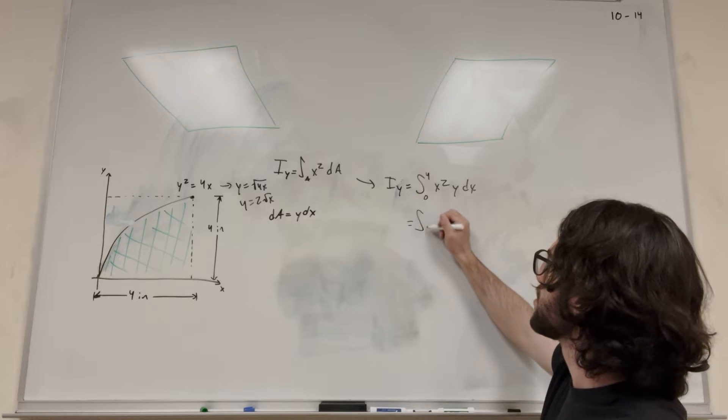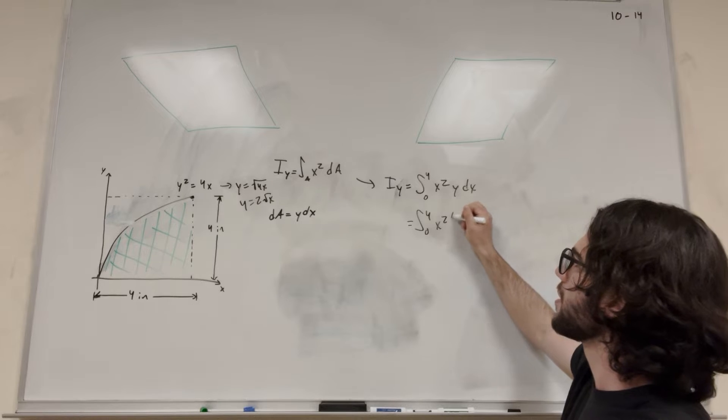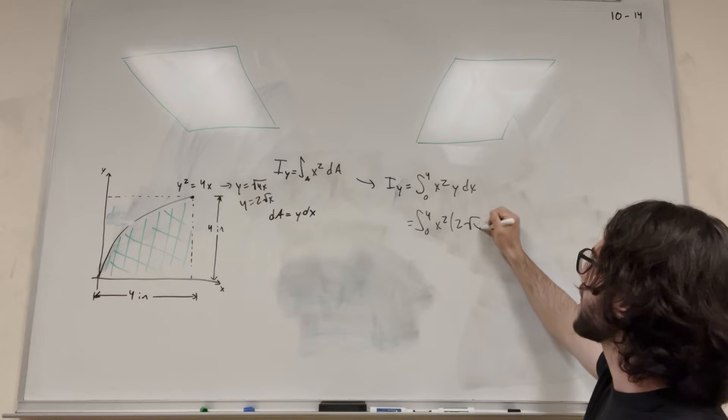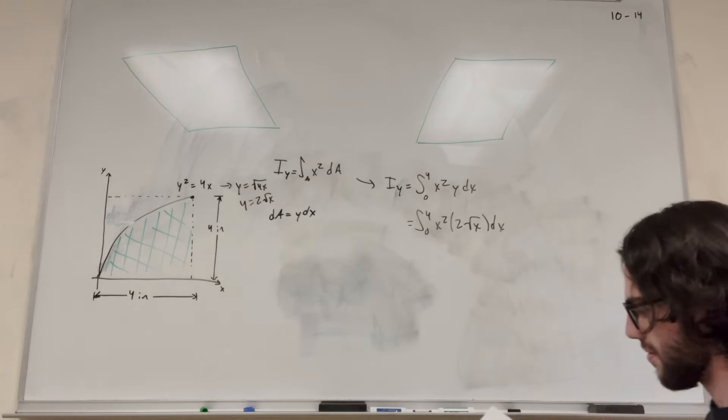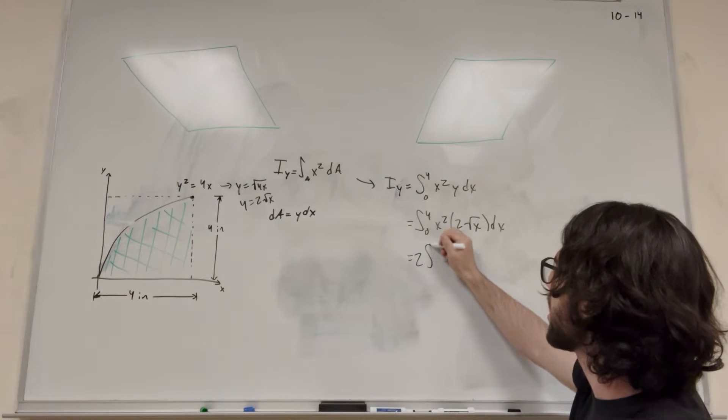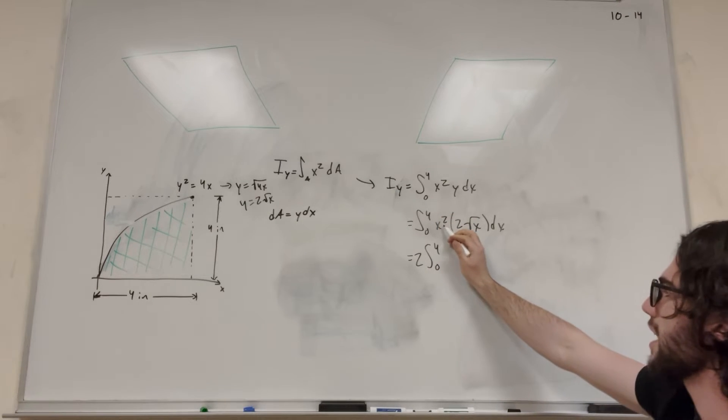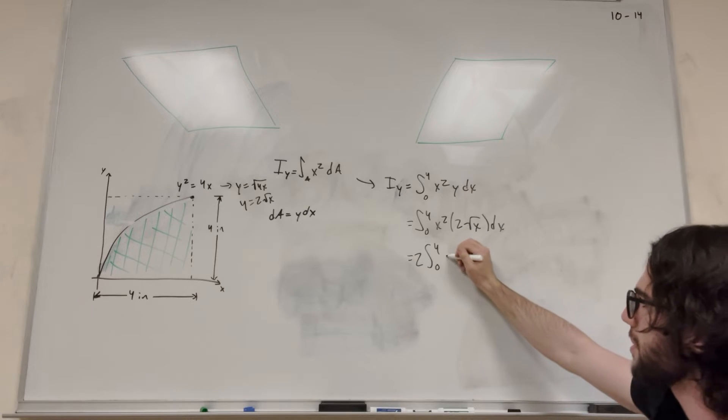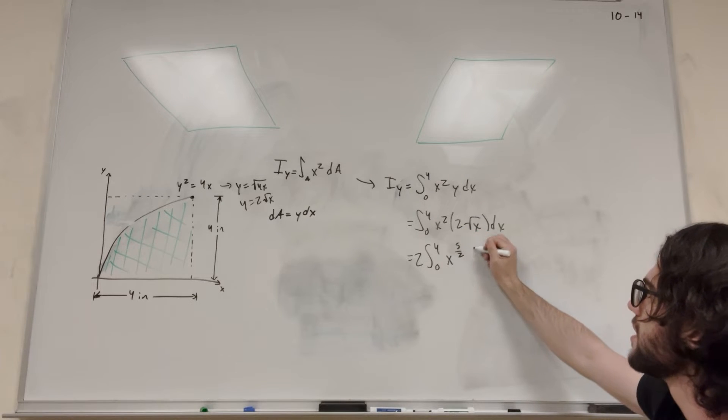So now we have this equal to the integral from 0 to 4 of x squared times 2 square root of x dx. Let's bring out the 2. So it's equal to 2 times the integral from 0 to 4. And then x squared times the square root of x is going to be x to the 5 halves dx.